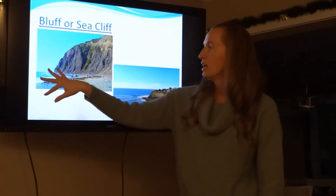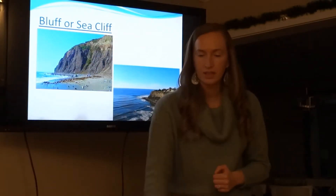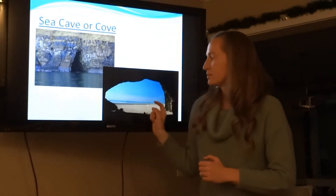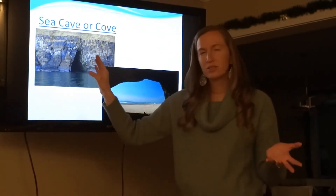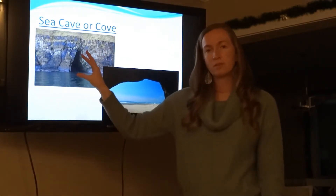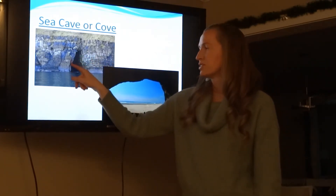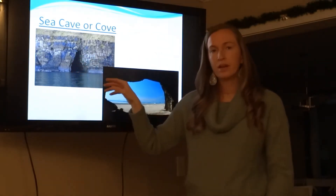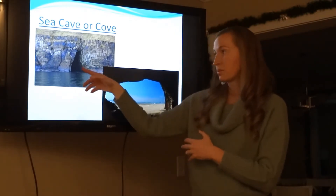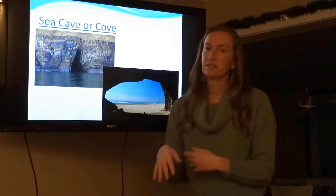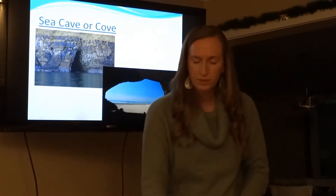You also get bluffs or sea cliffs, which are steep sharp edges — all formed from waves crashing into the land. Sea caves can form when there's a soft spot in the rock that starts to crack and break away when waves hit it. It's like a domino effect: once it starts to break down, it gets easier and easier to wear away, and you're left with these holes.